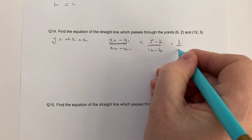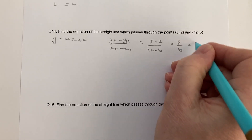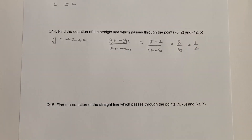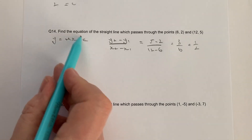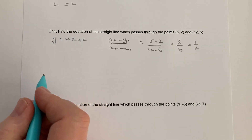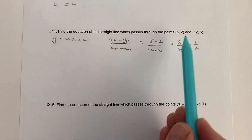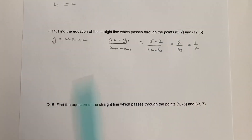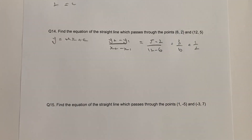So that's going to give me 3 over 6. Therefore, the gradient of this particular line is going to be a half. So I can use this value of a half now in this general form, and I'm just going to use the smaller values — you don't have to.